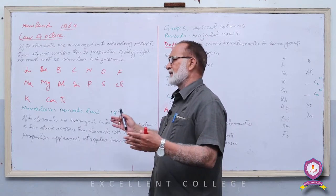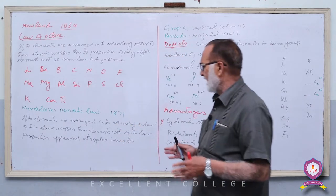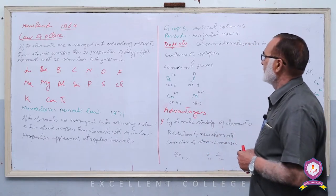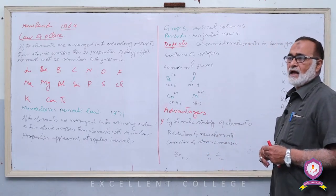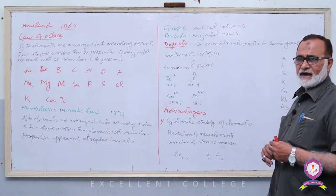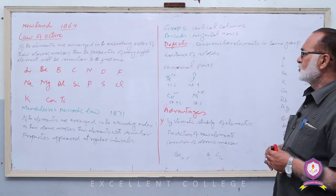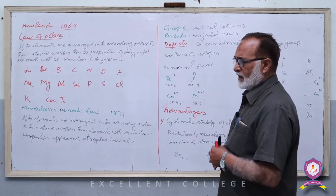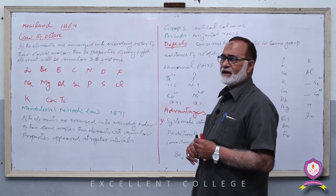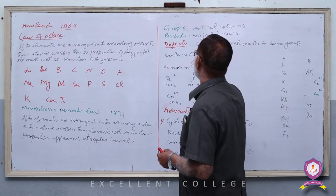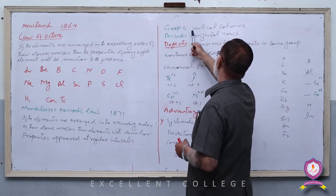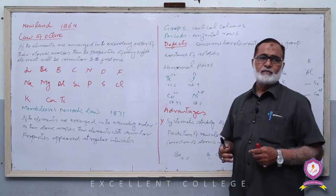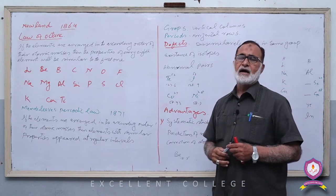That was the first precise and systematic periodic table proposed by any scientist — elements کو ان کی atomic mass کی بنیاد پر ترتیب دیا گیا اور ایک باقاعدہ table بنایا گیا — that is called Mendeleev's Periodic Table۔ اس میں vertical columns from top to bottom کو Groups کا نام دیا گیا۔